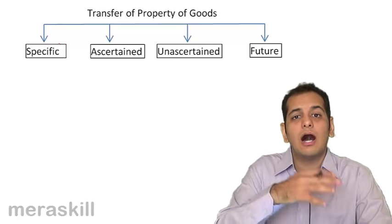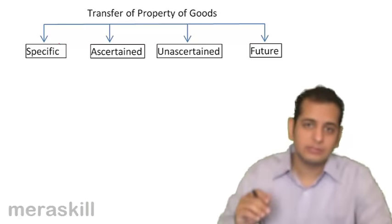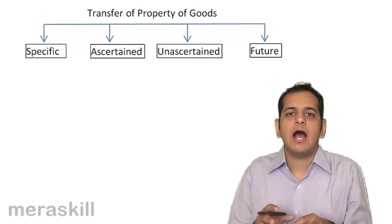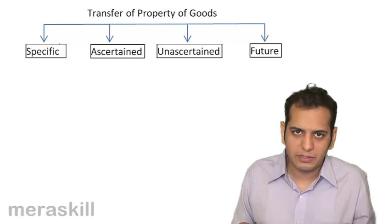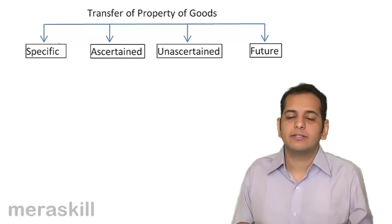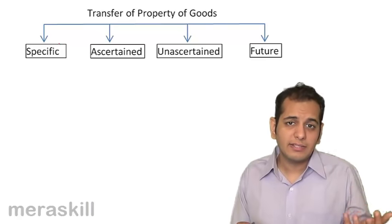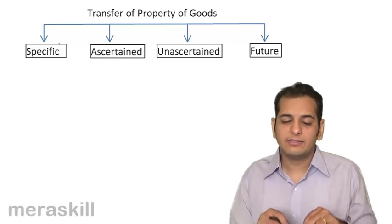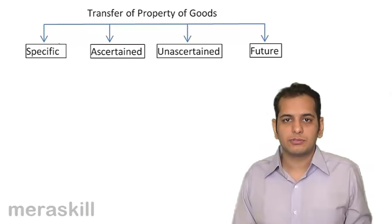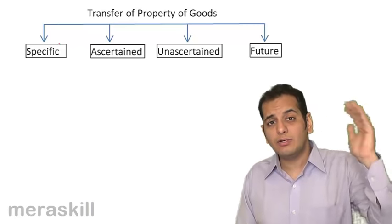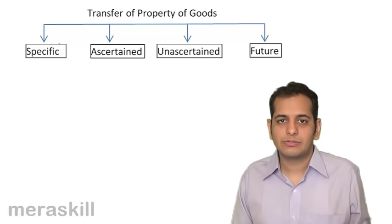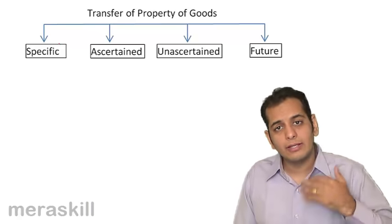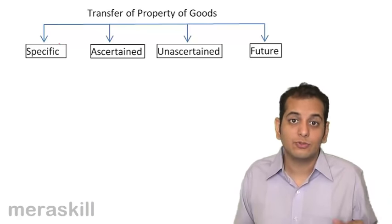Existing goods are those goods which exist and are in being when the contract of sale is made — present at the time of the contract. It's not like they will be produced or grown; they have already been produced and the harvest has been cut. So they are in existence and available for sale.